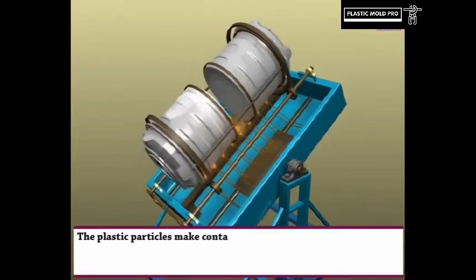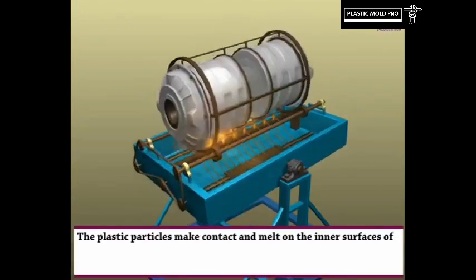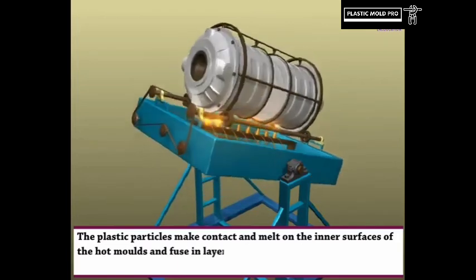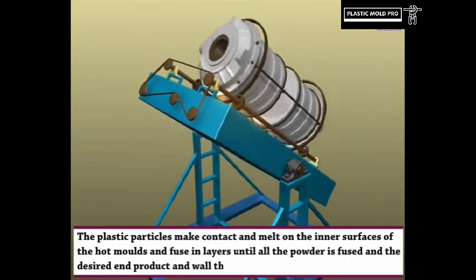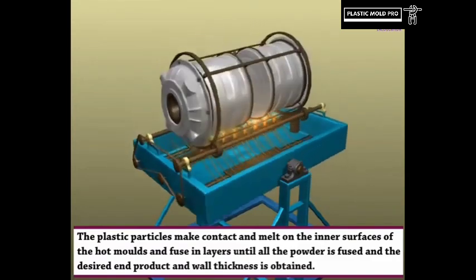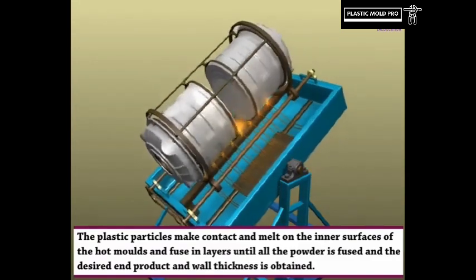The plastic particles make contact and melt on the inner surfaces of the hot molds, fusing in layers until all the powder is fused and the desired end product and wall thickness is obtained.